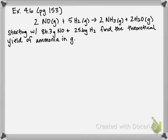We have two different reactant amounts, and we have to figure out which one is the limiting reactant. The limiting reactant is like the ingredient that runs out first. Once the limiting reactant runs out, we can no longer produce any more of our product.